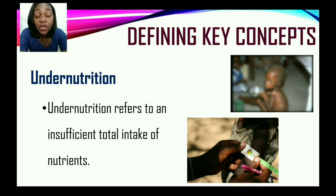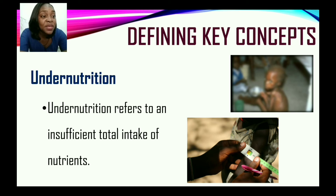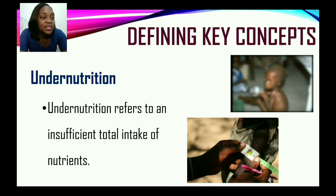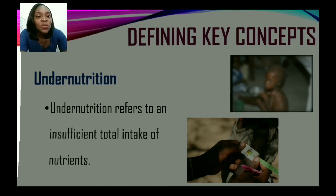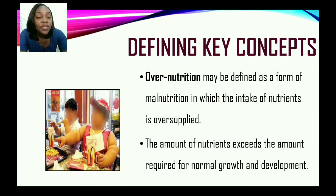Undernutrition refers to the insufficient intake of nutrients. Based on nutritional assessment — as seen in the image showing arm measurements — you can identify undernutrition. If your answer for that assessment type was anthropometric, you are correct.